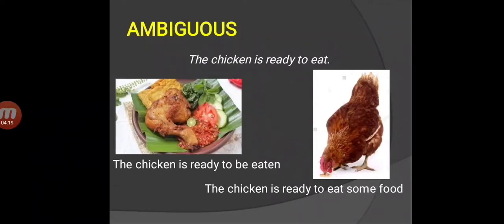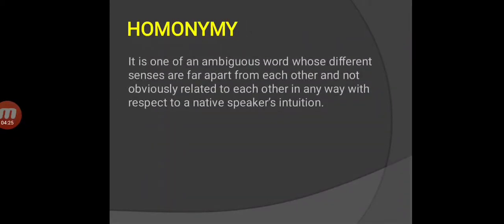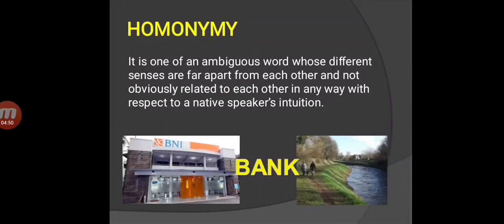Next is homonymy. A case of homonymy is one of an ambiguous word whose different senses are far apart from each other and not obviously related to each other in any way with respect to a native speaker's intuition. Cases of homonymy seem very definitely to be matters of mere accident or coincidence. For example, the word bank - bank can be a financial institution and bank can also be the side of a river or stream. This is the clearest case of homonymy.